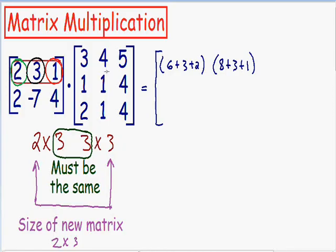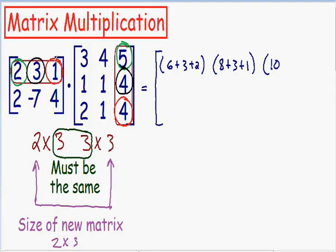Now I'm going to do the first row by the third column. The first row is already boxed from before, and I will put a box around the third column. Once again I'm going to circle the first numbers in green, the second numbers in black, and the third numbers in red. Multiplying the green numbers: 2 times 5 is 10. The black numbers: 3 times 4 is positive 12. The red numbers: 1 times 4 is positive 4.